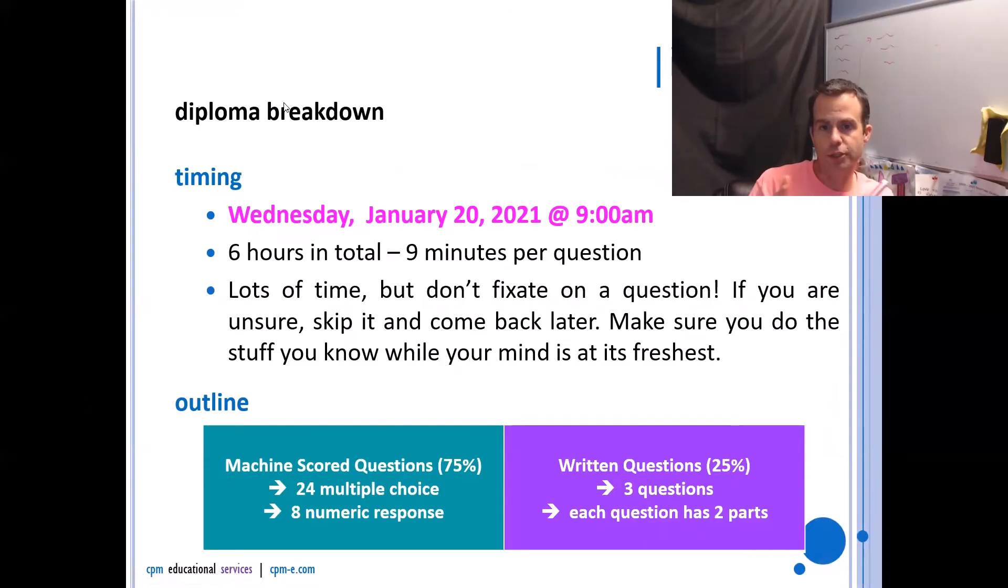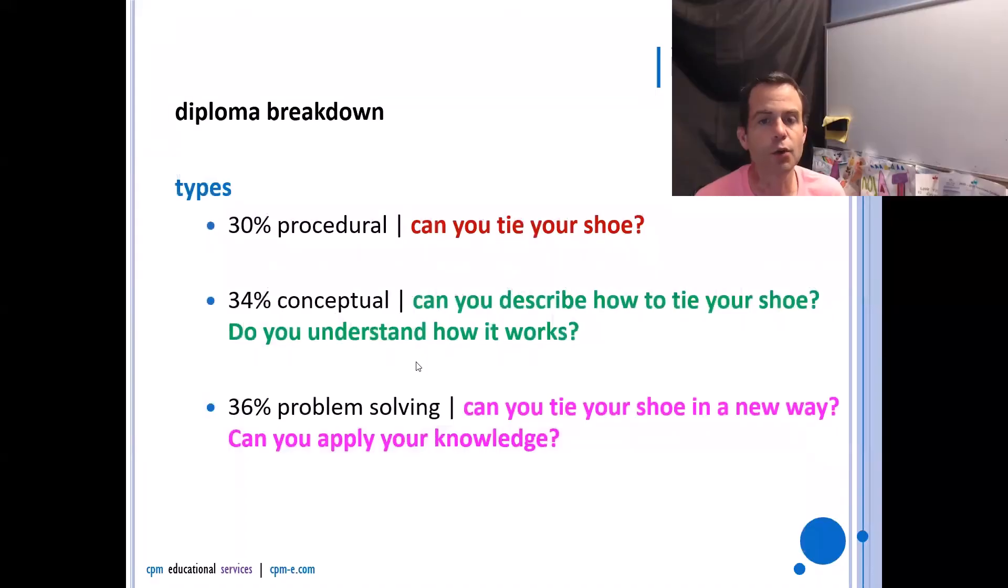The breakdown of the question, or the types of questions that you're going to have, the machine scored, which is worth 75% of the grade, there'll be 24 multiple choice and eight numeric response on that. And then in the written portion, which is worth 25%, you'll have three questions in total, and then each question will have two parts. So kind of six questions all together. So it's 30% procedural, 34% conceptual, and then 36% problem solving.